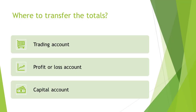The trading account is closed off by transferring the gross profit to the profit and loss account. The profit and loss account is used to determine the net profit or net loss of a business, and is used in both retail and service entities. Once all income and expense accounts are closed off, the profit and loss account is closed off by transferring the net profit or net loss to the capital account.